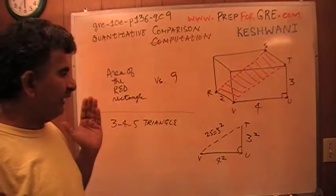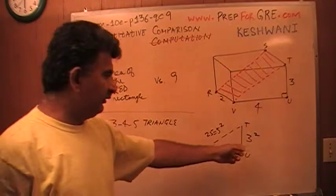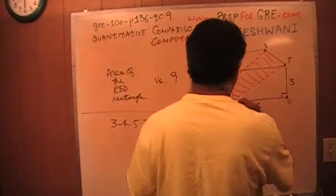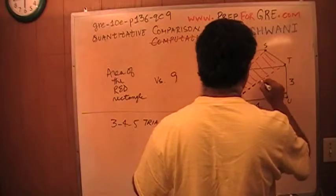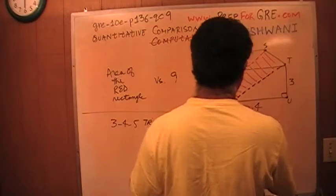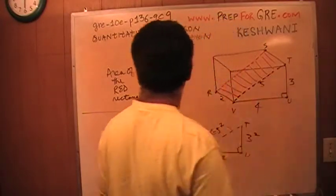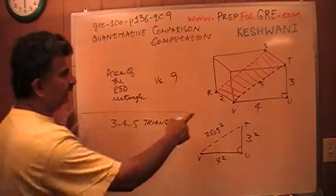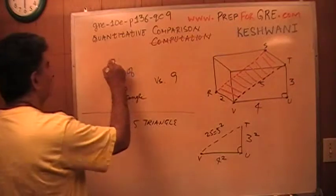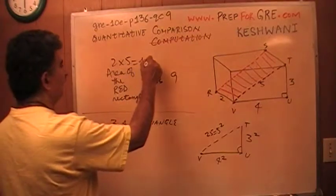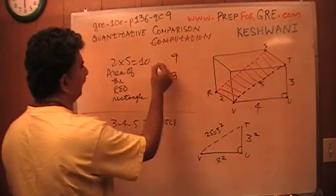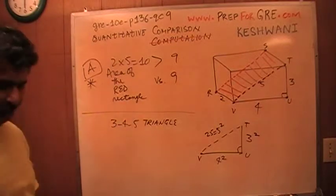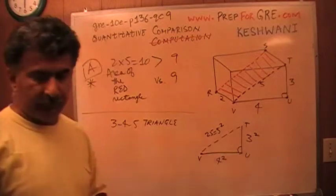So if you see a 3, 4, 5 triangle, you don't have to do any work. If this side is 3 and this side is 4, that would have to be 5. So this side here, V to T is 5. And therefore, the area of the rectangle is simply 2 times 5, which of course is 10, which is more than 9. Therefore, the answer is A. That's all there is.